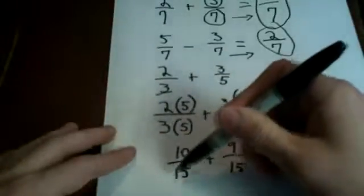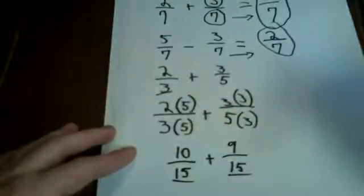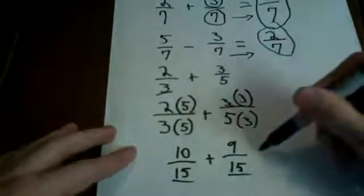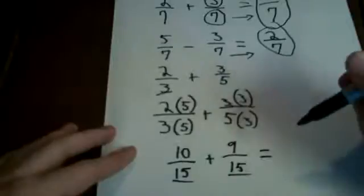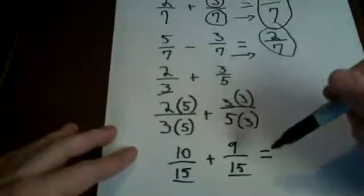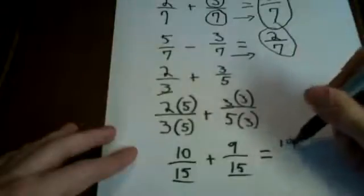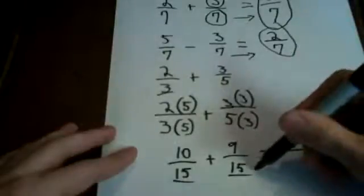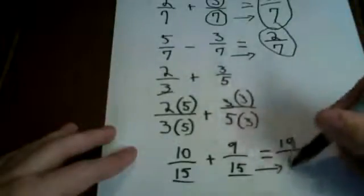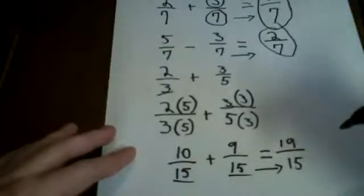Now, as you can see, our denominators are now common because they're both 15. So 10 15ths plus 9 15ths. You're going to do the same rule as you did before. So 10 plus 9 equals 19 over, slide your denominator over, 15. 19 15ths.